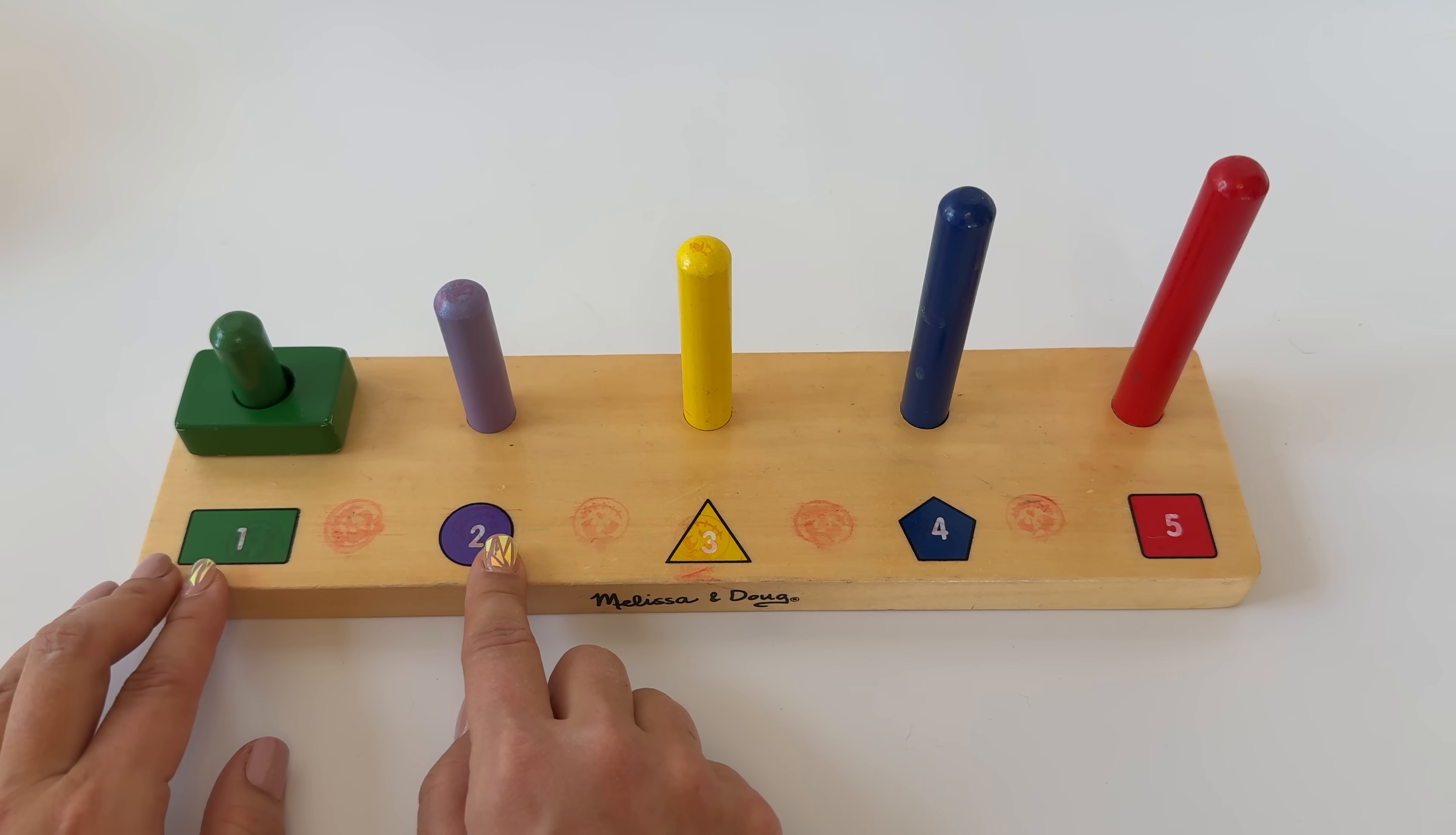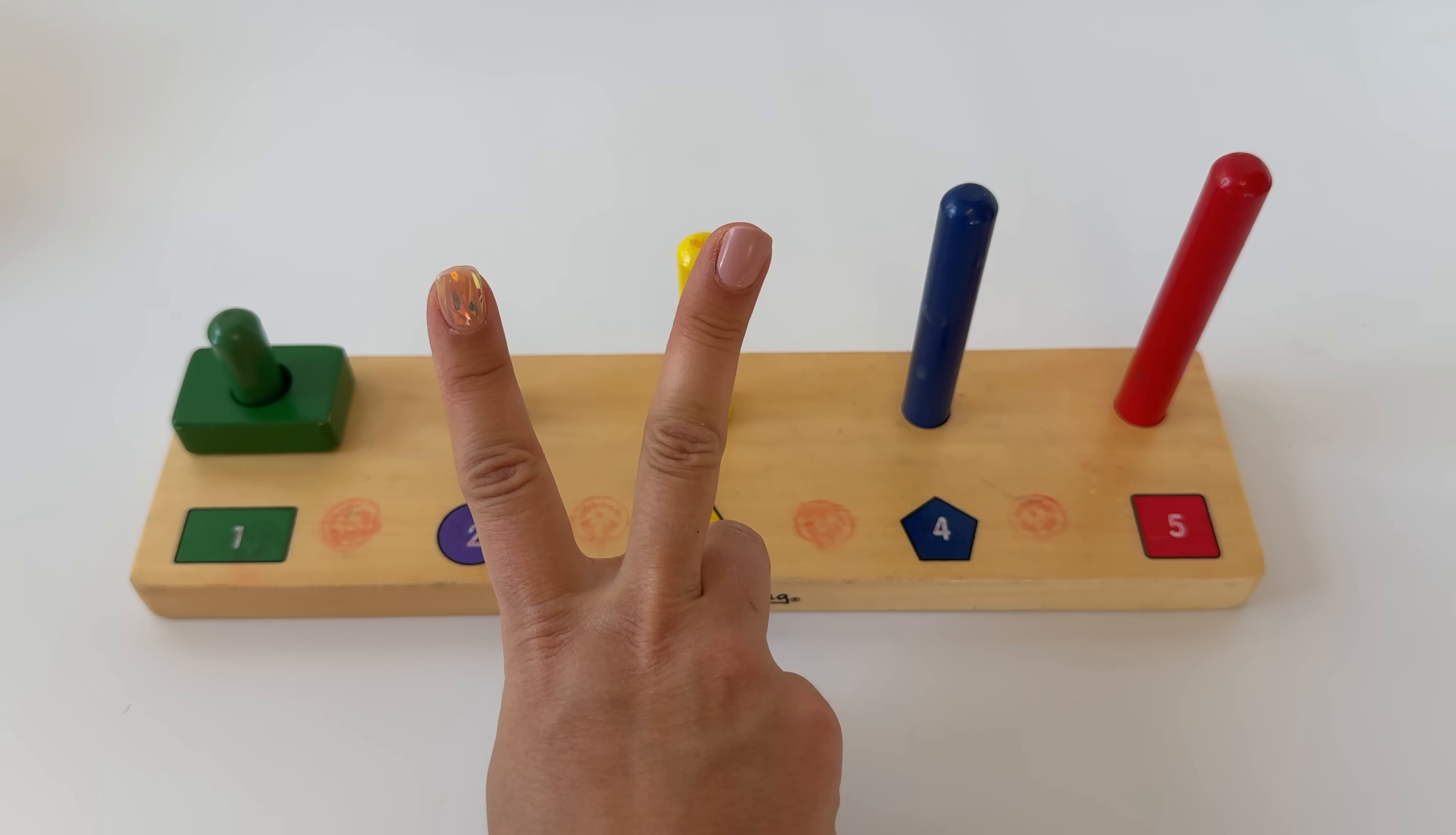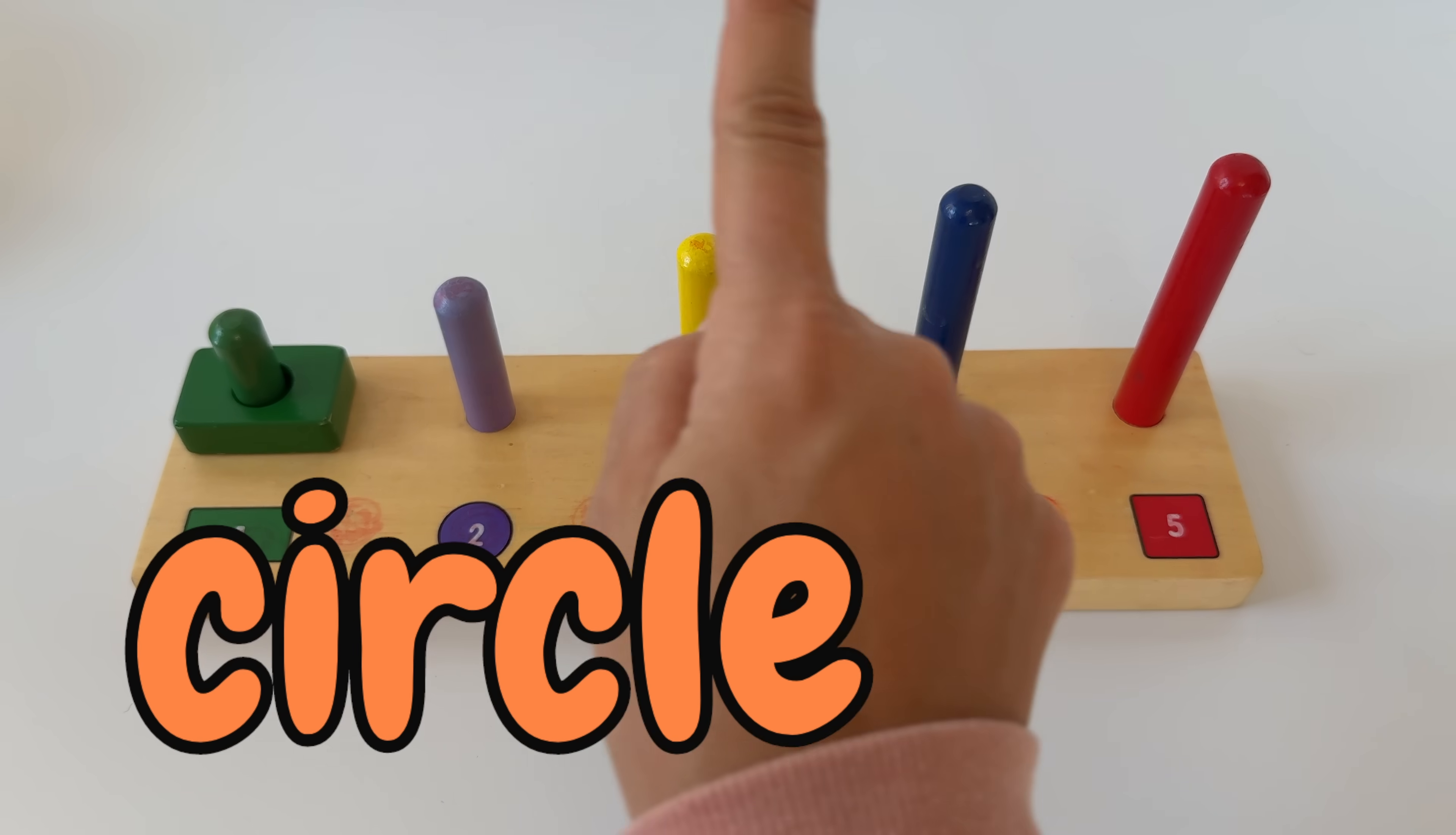Okay, what number is next? Let's start here. One, two. Say two. And let's hold up two fingers. One, two. Two. Okay, what color is the two? It's purple. And the shape is a circle. Say circle.